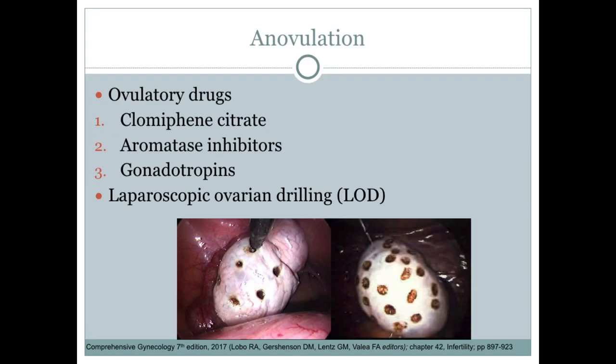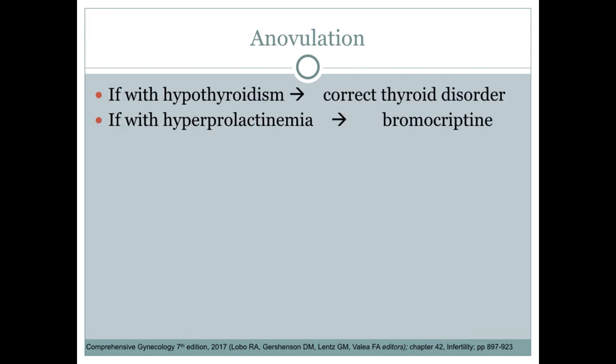Treatment will depend on the cause of infertility. If the cause is anovulation, we give treatment to induce ovulation — ovulatory drugs or a surgical procedure such as laparoscopic ovarian drilling. For ovulatory drugs, the most common are clomiphene citrate, aromatase inhibitors, and gonadotropins. Laparoscopic ovarian drilling is done for PCOS patients. If anovulation is secondary to hypothyroidism, we correct the thyroid disorder. If secondary to hyperprolactinemia, we correct it by giving bromocriptine.